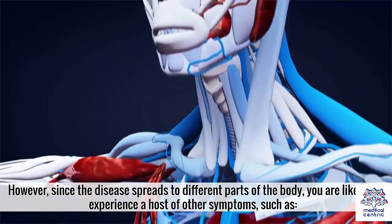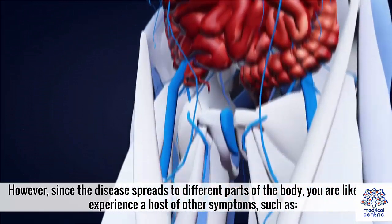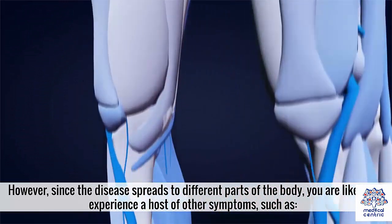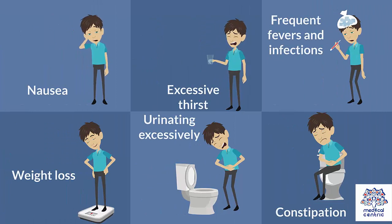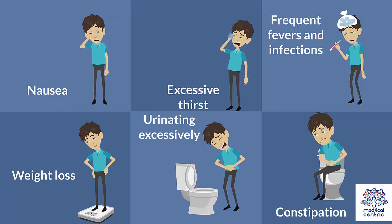However, since the disease spreads to different parts of the body, you are likely to experience a host of other symptoms, such as: 1) nausea, 2) excessive thirst, 3) frequent fevers and infections, 4) weight loss, 5) urinating excessively, 6) constipation.